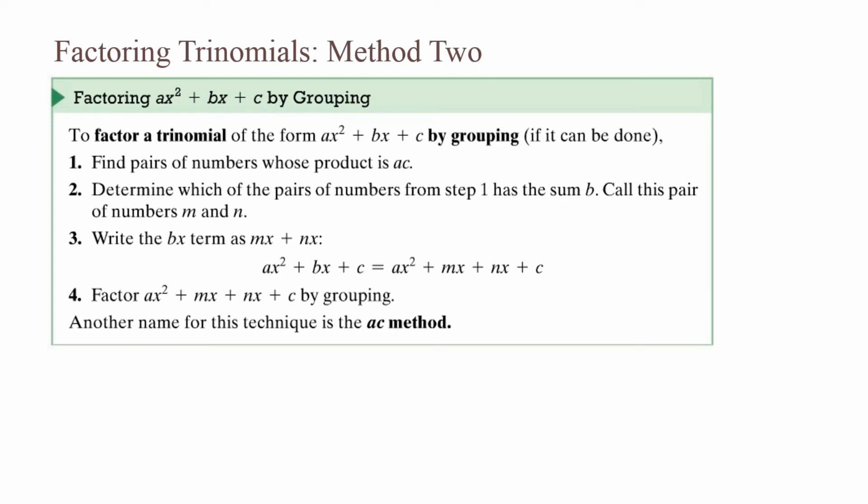Factoring Trinomials Method 2: factoring ax² plus bx plus c by grouping. To factor by this method: first, find pairs of numbers whose product is ac. Second, determine which pair has sum b — call them m and n. Third, write the bx term as mx plus nx, so ax² plus bx plus c becomes ax² plus mx plus nx plus c. Fourth, factor ax² plus mx plus nx plus c by grouping. Another name for this method is the ac method.